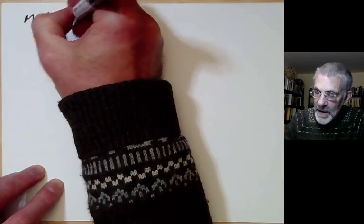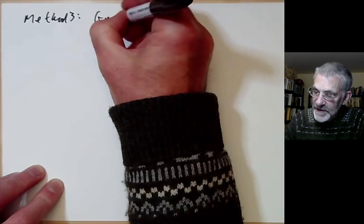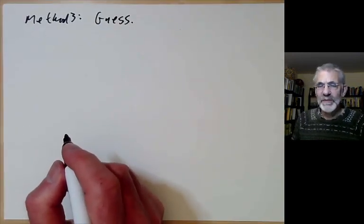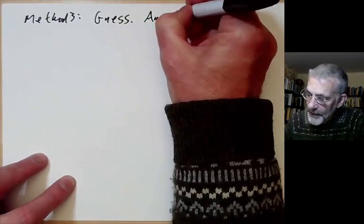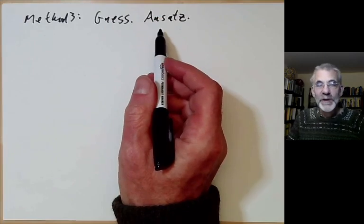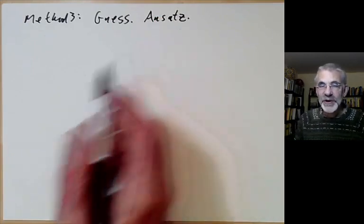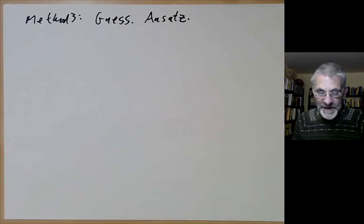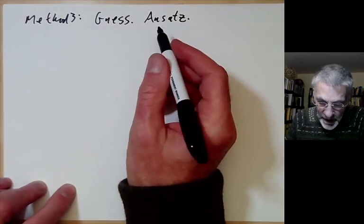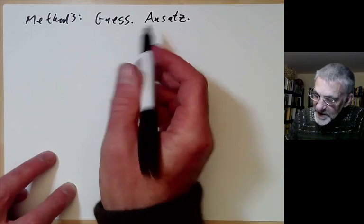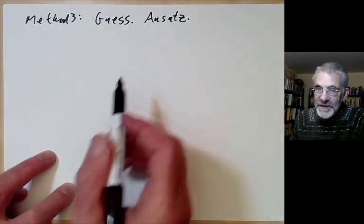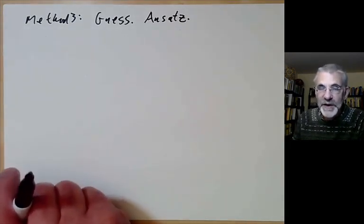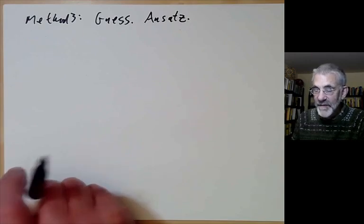Method 3 is to guess the answer — or more professionally, try an Ansatz. 'Ansatz' is a German word that basically just means 'guess', but since it's German it sounds very serious. An Ansatz means you write down a formula for the answer with some free parameters and then adjust those parameters to find your solution.